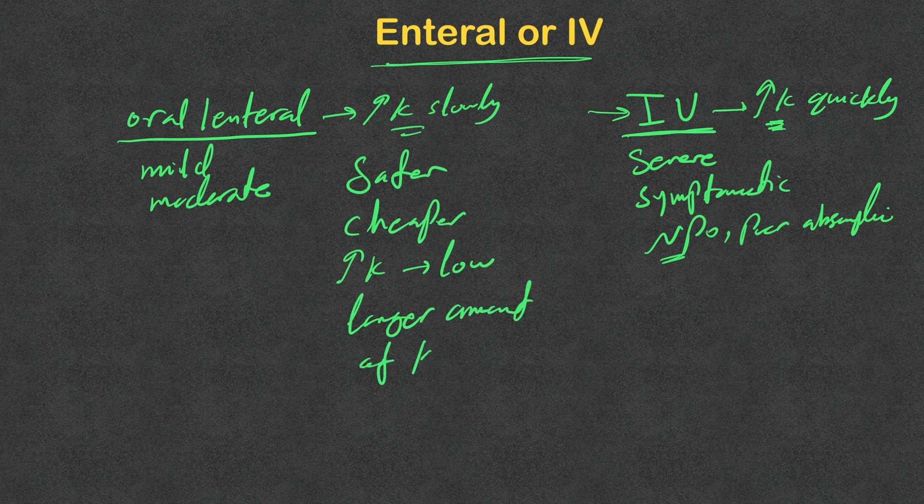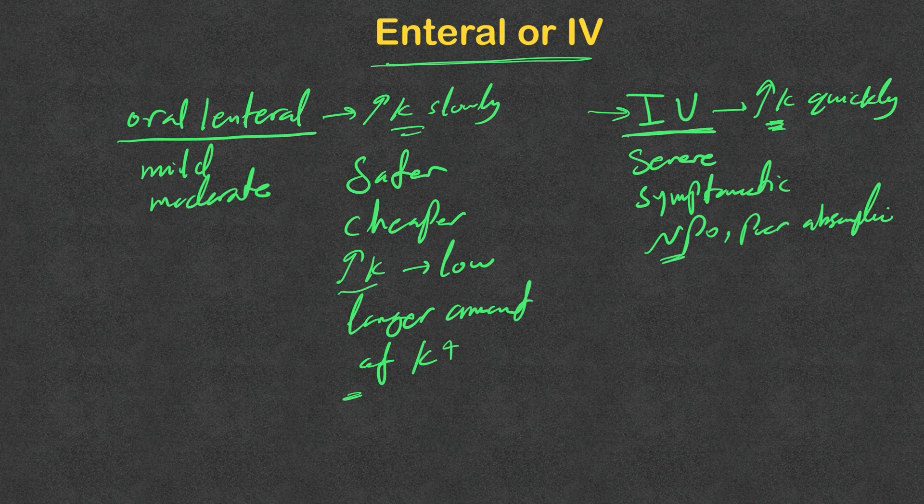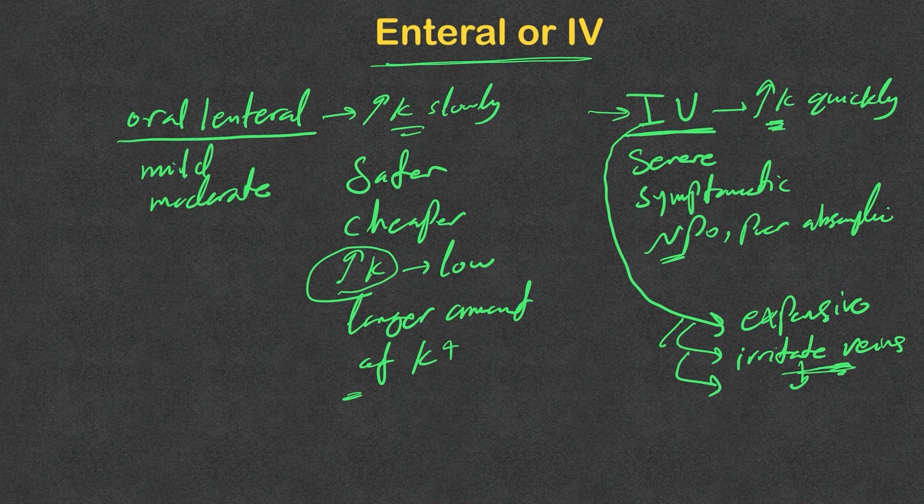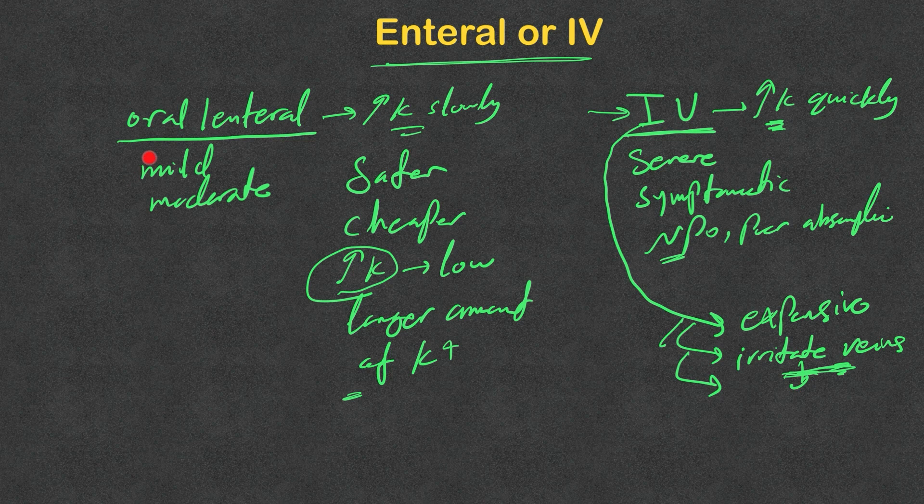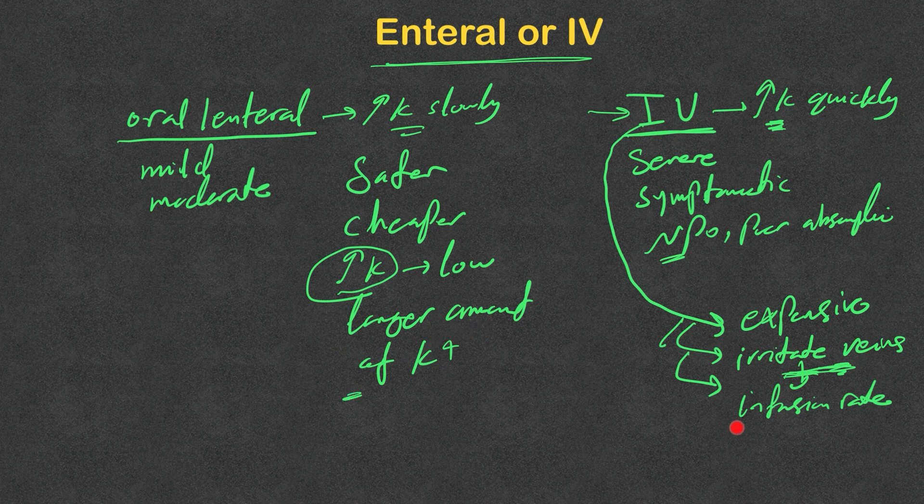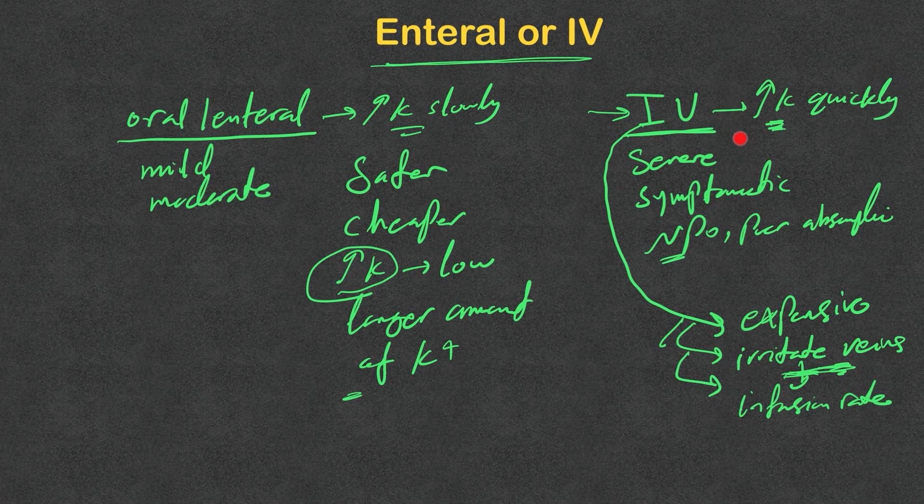On the other hand, IV potassium is expensive, irritates the veins and causes phlebitis, which can make it very difficult to access these veins in the future. That's why we always prefer to use oral potassium. Also, one drawback with IV potassium is that we have a limit on the infusion rate. With oral we can give larger amounts of potassium, while with IV we are limited because we are afraid that we give too much potassium, we raise the potassium level quickly in the serum and cause hyperkalemia. I'll discuss this in detail soon.